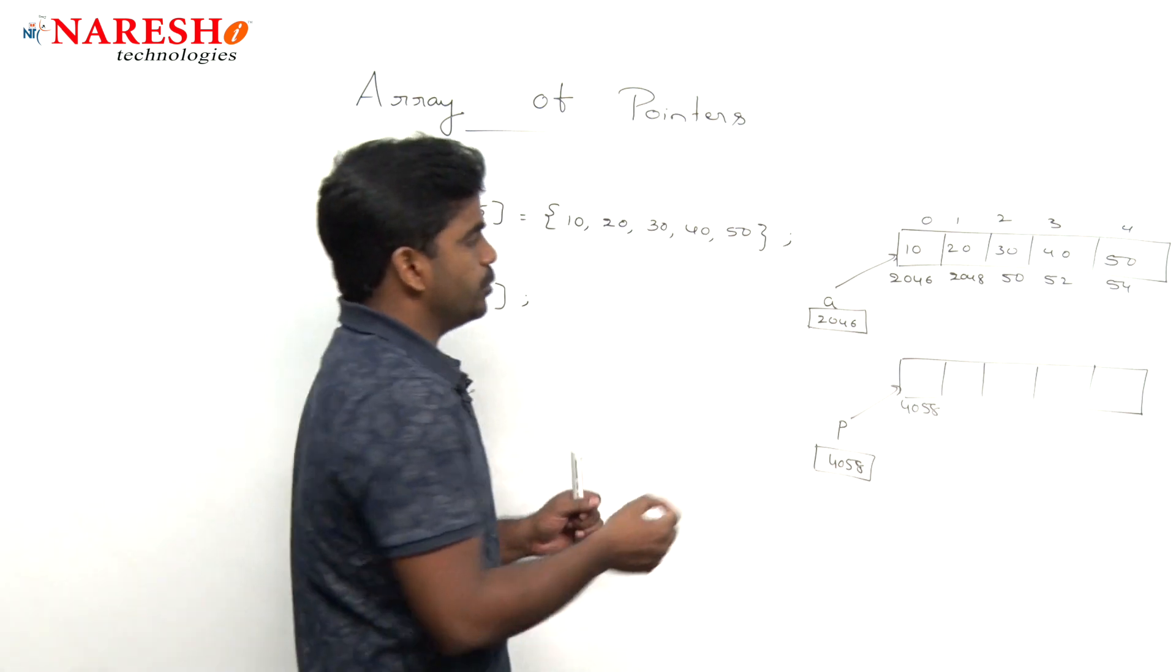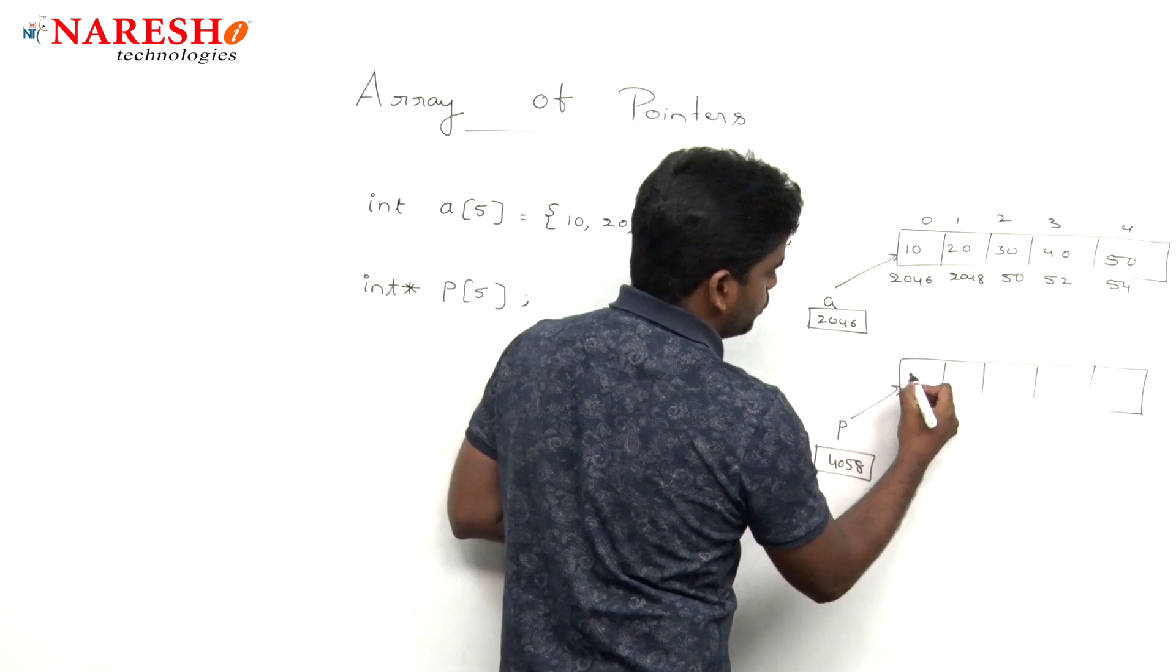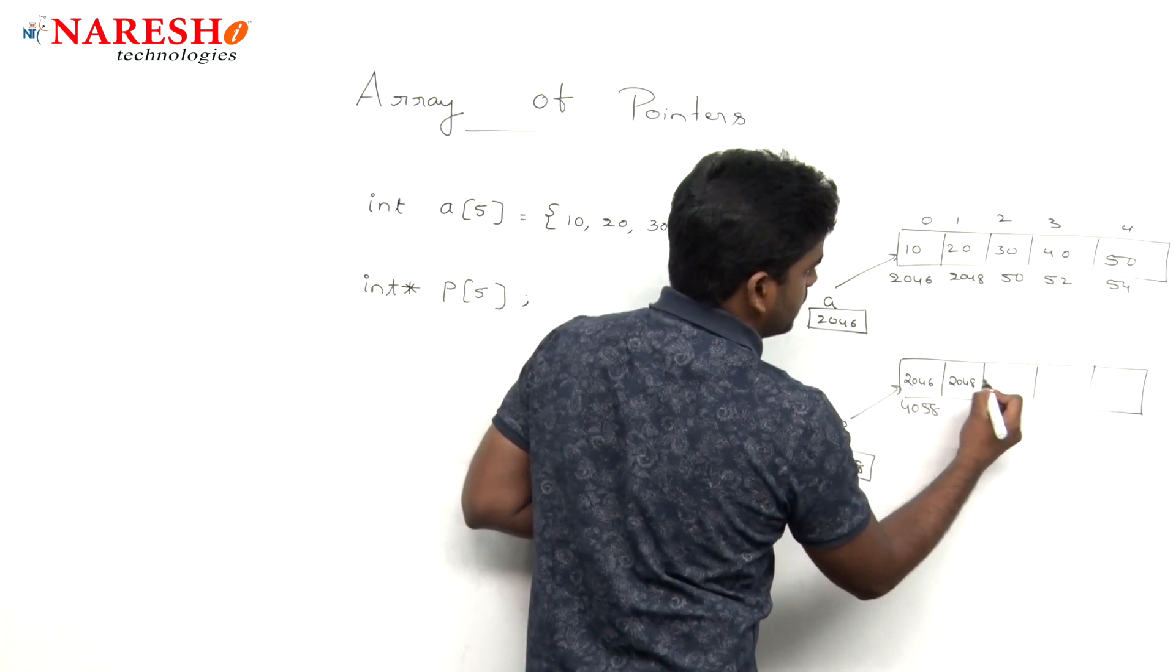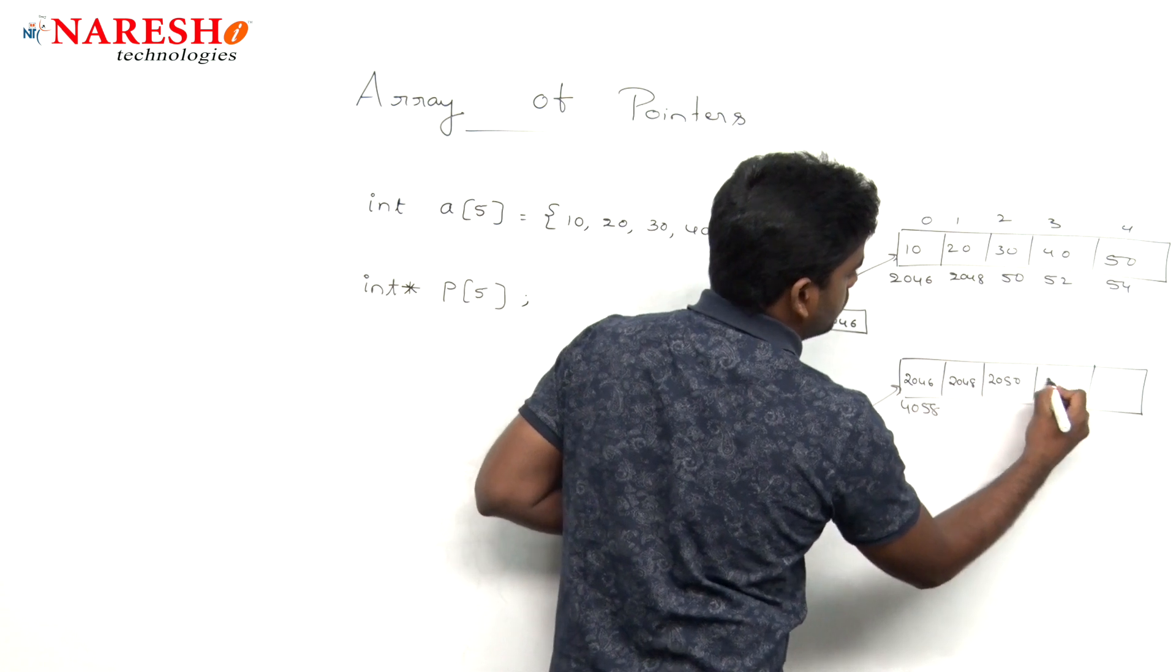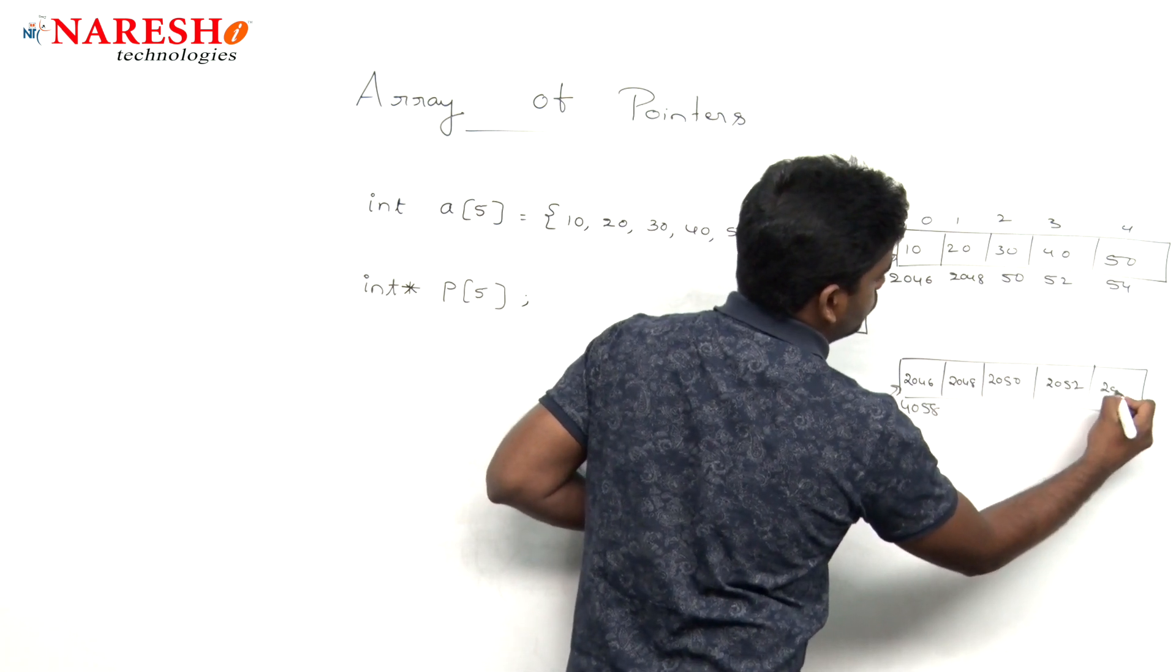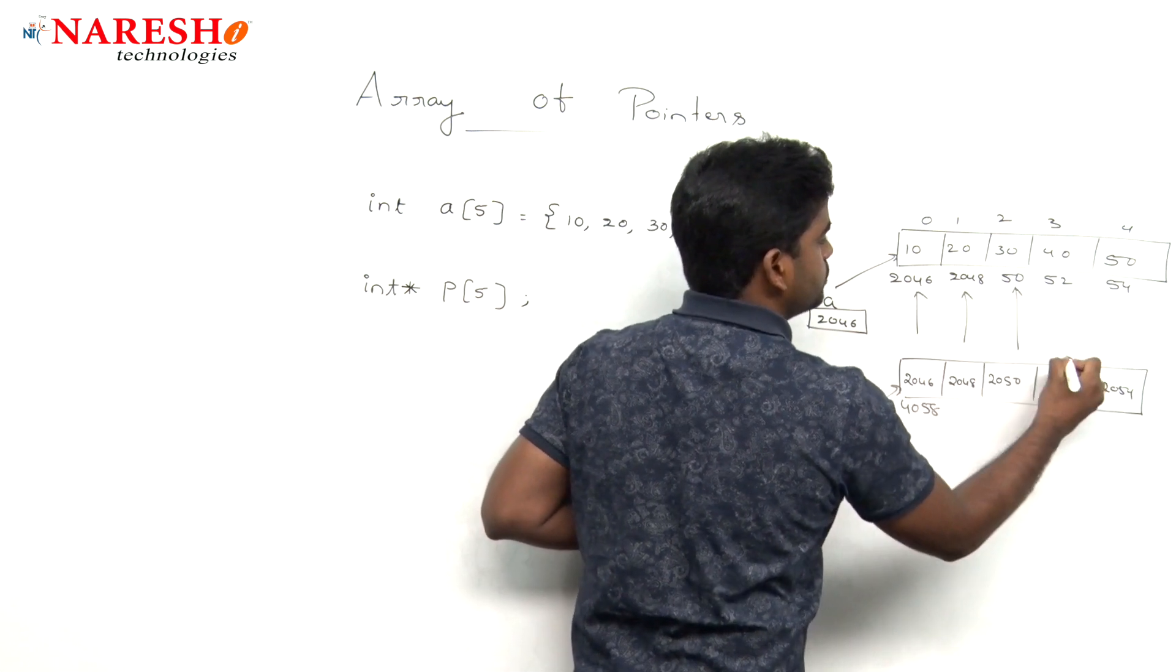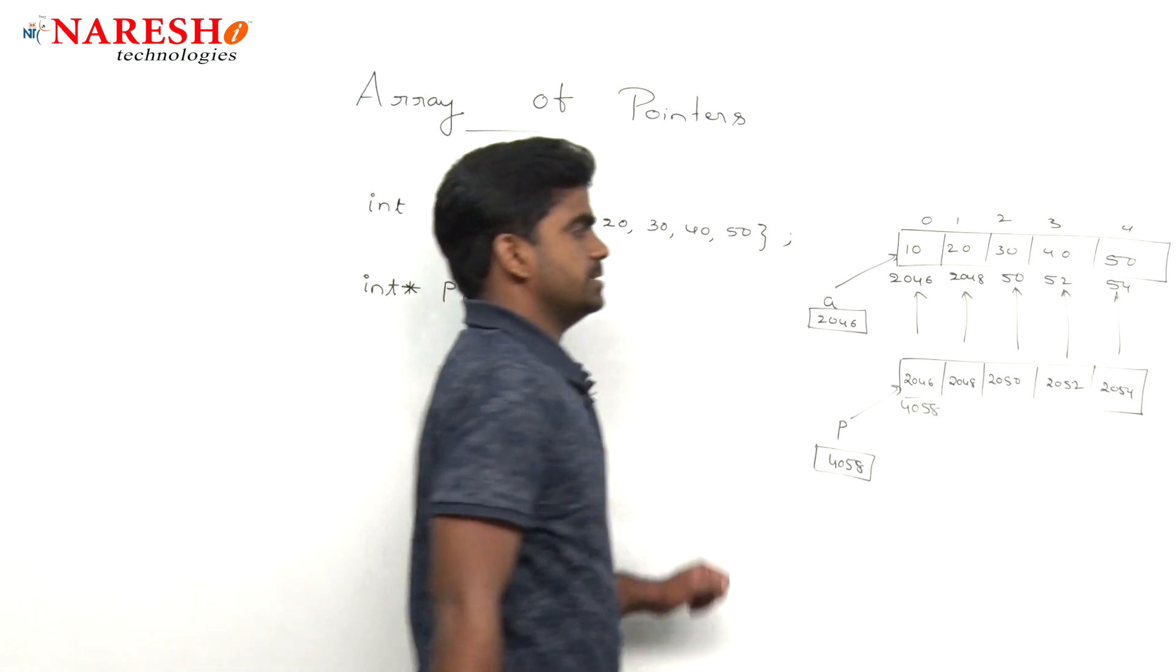Now, in this code I am going to explain how to store 2046 here, how to store 2048 here, 2050, 2052, 2054. So, it's pointing like this, pointing like this, pointing like this.